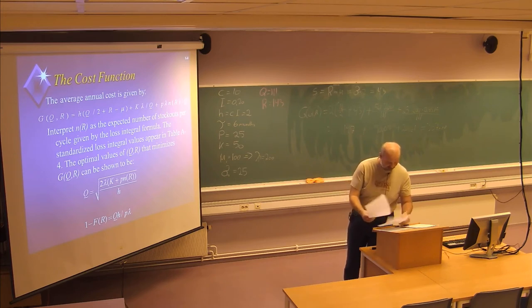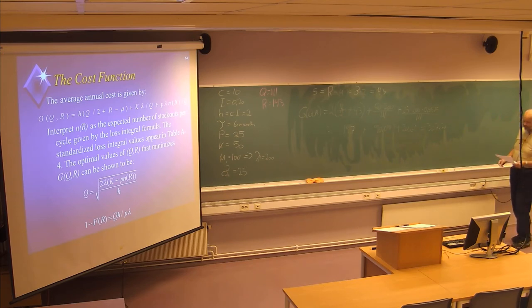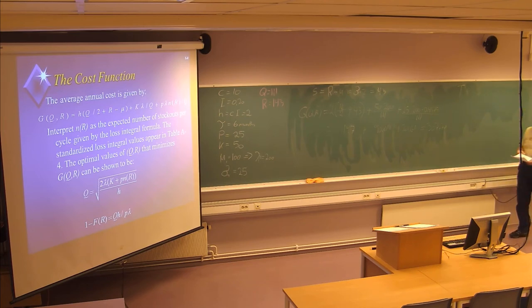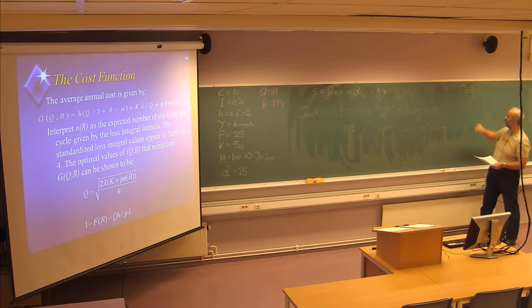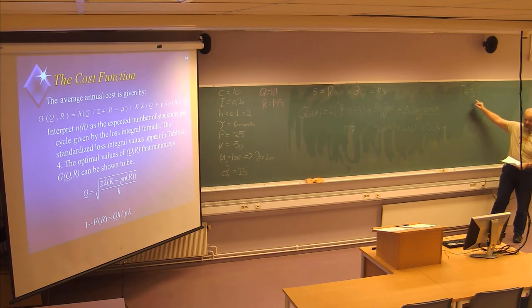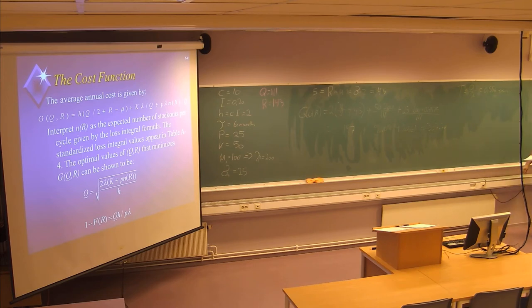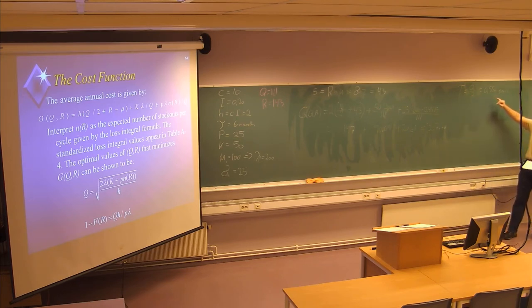A few more parameters to note: the cycle time — the time between orders and deliveries — is Q divided by lambda = 111 / 200 = 0.556 years, approximately 6.7 months.